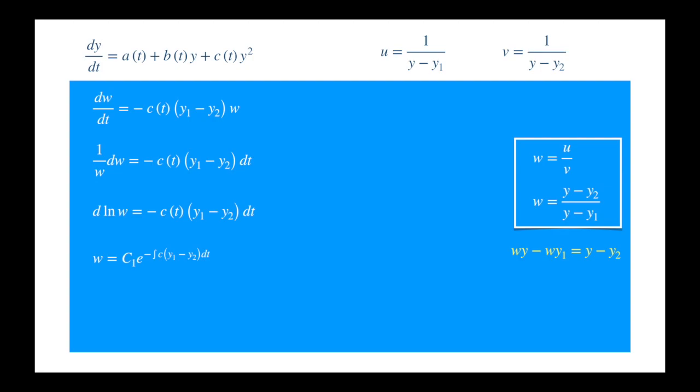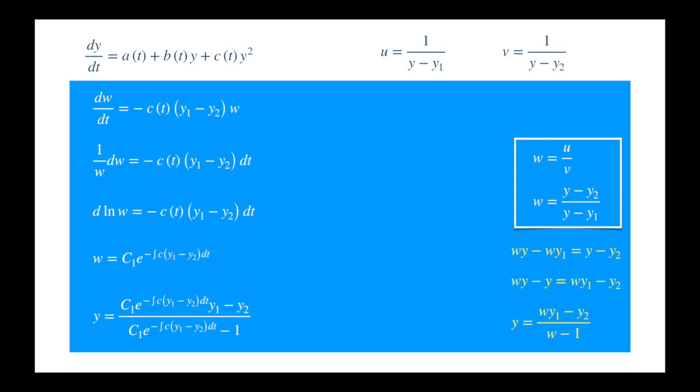So we have w, but we are after y. We need to write y in terms of w, so we shift y minus y1 to the left-hand side. Next we collect the terms containing y on the left-hand side, then factor out y, and shift w minus 1 to the right-hand side. Now we just substitute for w and we get the solution of the Riccati equation, which is again in the same form as in the previous example, but the functions are different. And now we have one integral instead of two, so the story holds. When you know one particular solution, you will have to evaluate two integrals. And if you know two solutions, then you will have to evaluate one integral.